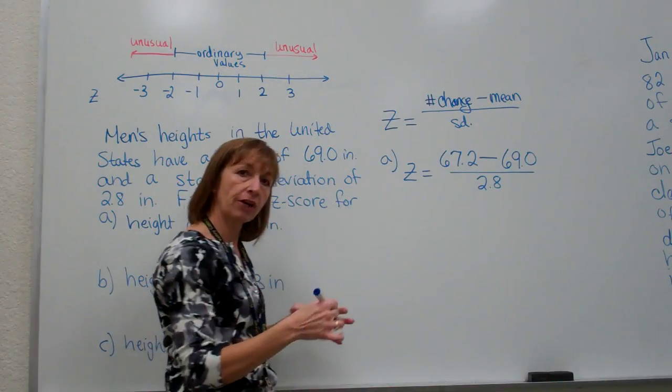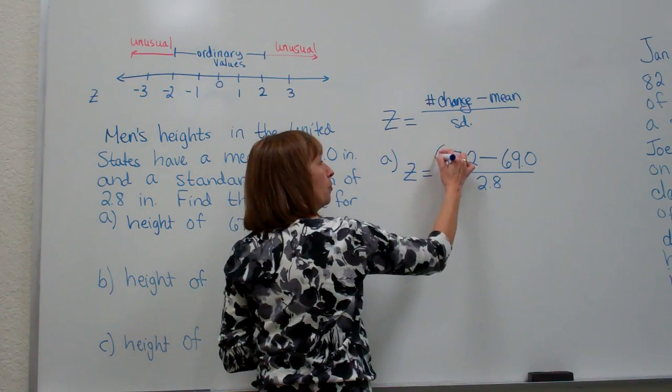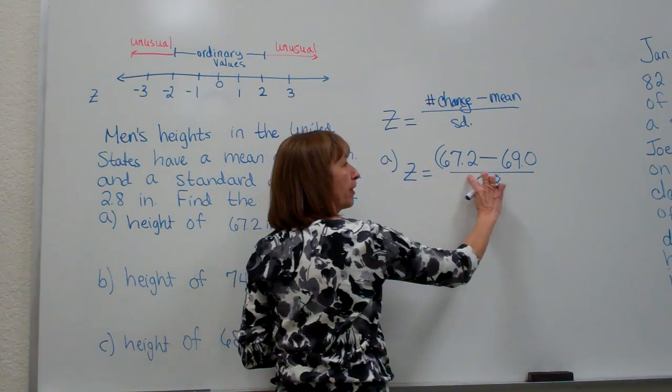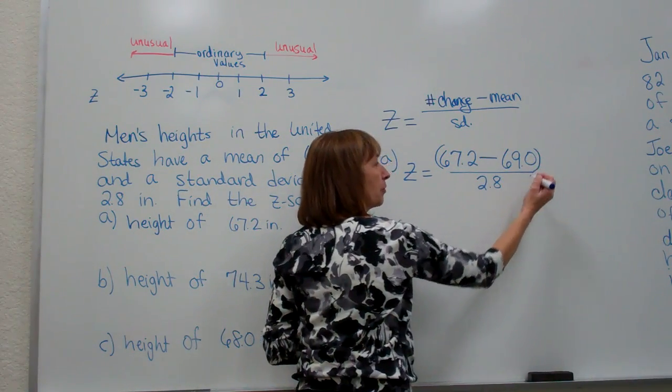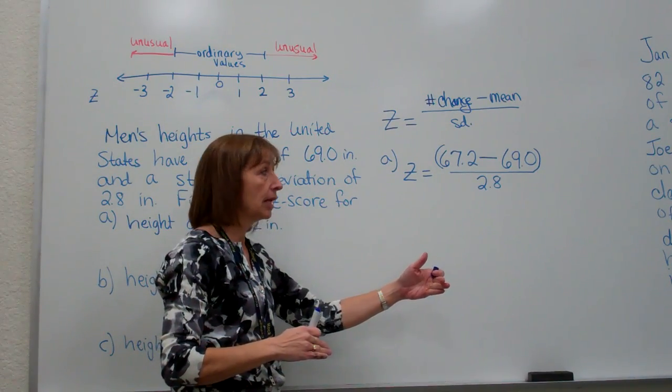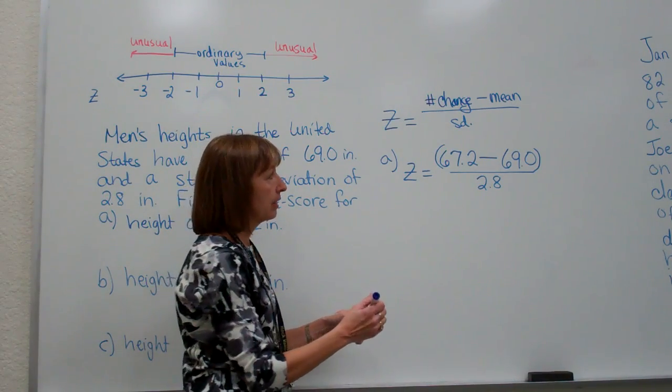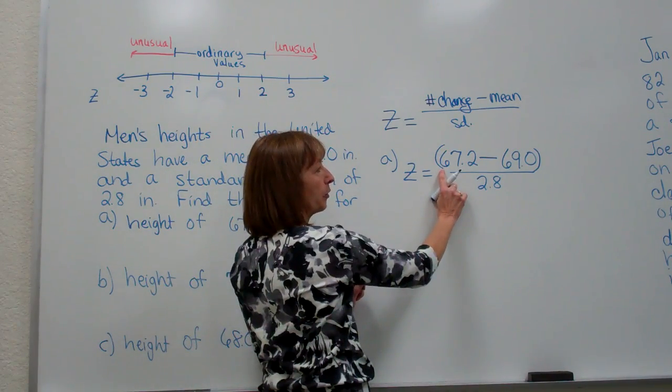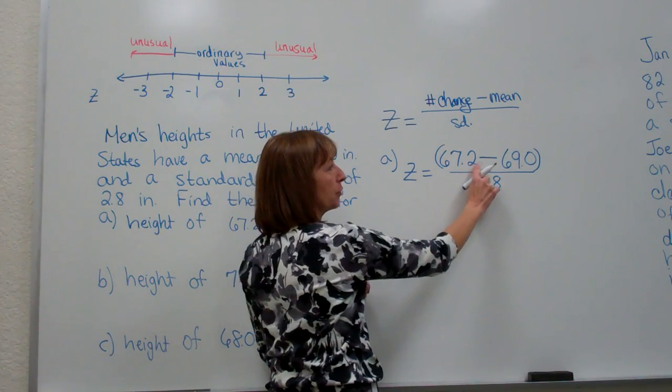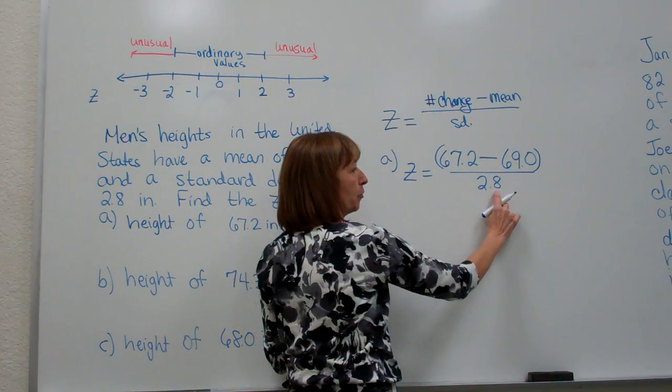Make sure that if you calculate this through your calculator in one setting, that you open the parentheses at the beginning of your fraction bar and close the parentheses at the end. Because the length of a fraction bar is a grouping symbol and you want to make sure to enter that information so that the calculator takes it that way. So if we enter this by opening a parentheses, 67.2 minus 69.0, close our parentheses and divide by 2.8...